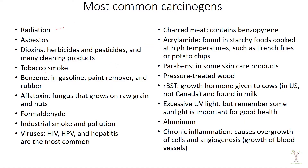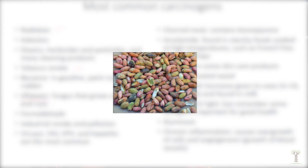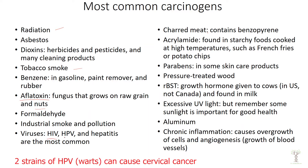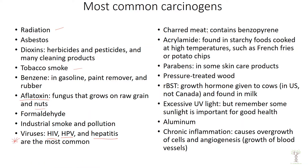Radiation — that would be things like x-rays — dioxins, tobacco smoke. Aflatoxin is interesting because this is why we roast nuts — different kinds of aflatoxin fungus can grow on raw nuts and it can be quite carcinogenic. Formaldehyde and certain viruses: HIV, HPV, and hepatitis are the most common viruses that can cause DNA mutations.